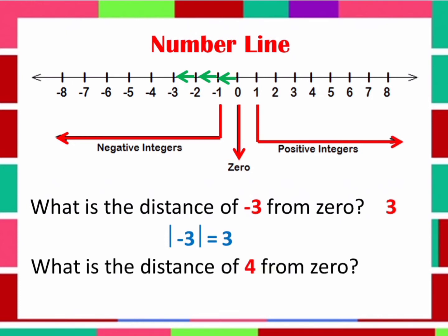How about the distance of 4 from 0? Again, let's count how many units positive 4 is from 0: 1, 2, 3, 4. So, the distance of 4 from 0 is 4. Therefore, the Absolute Value of 4 is equal to 4.